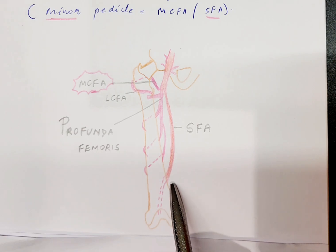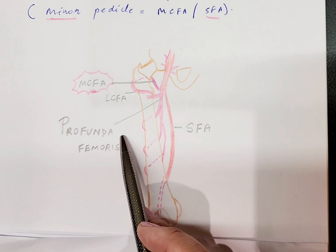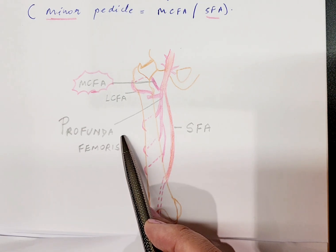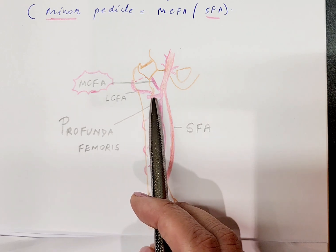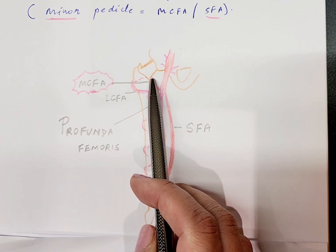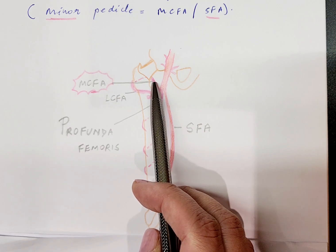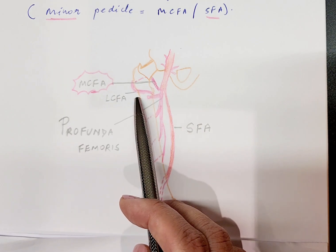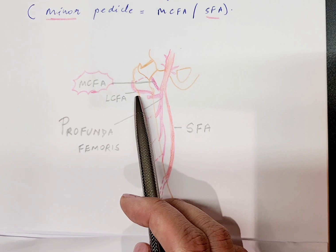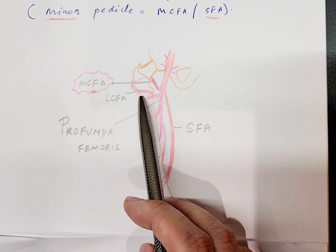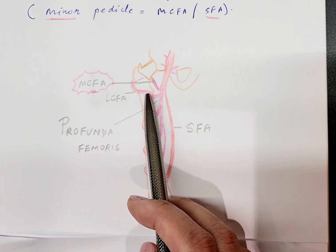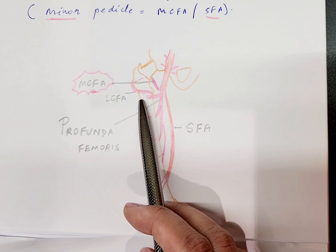The profunda femoris, with which we are concerned, is going to divide into the medial circumflex femoral artery, which is the vascularity in question for the gracilis flap, and the LCFA, that is the lateral circumflex femoral artery, which further has an ascending branch, a transverse branch, and a descending branch. But that is something we will discuss when we see the anterolateral thigh flap.